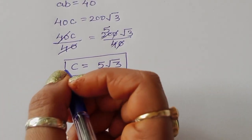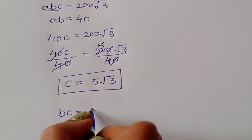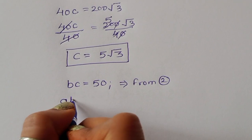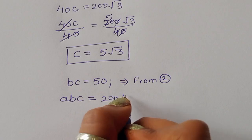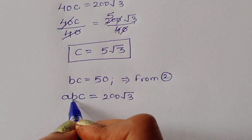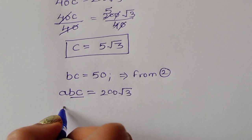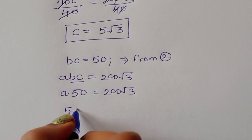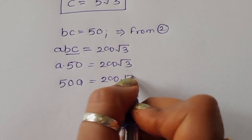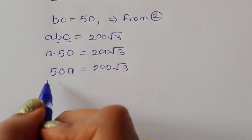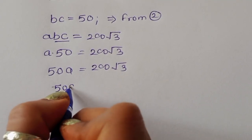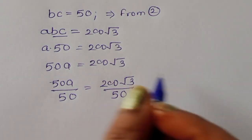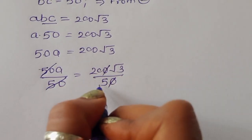From equation two, bc = 50, so abc = 50a = 200√3. Dividing both sides by 50, a = 200√3 ÷ 50 = 4√3. So a = 4√3.